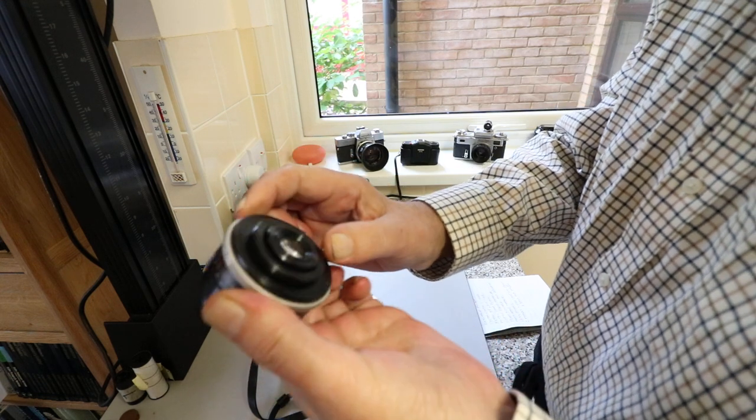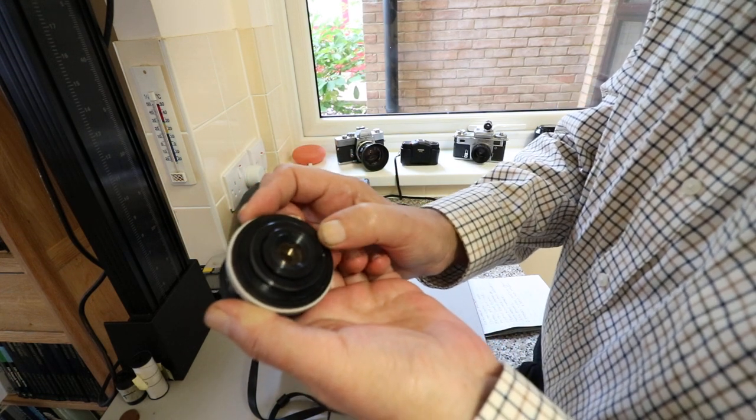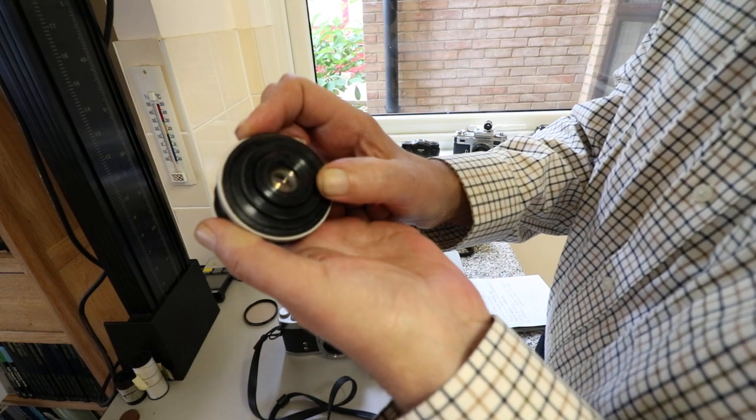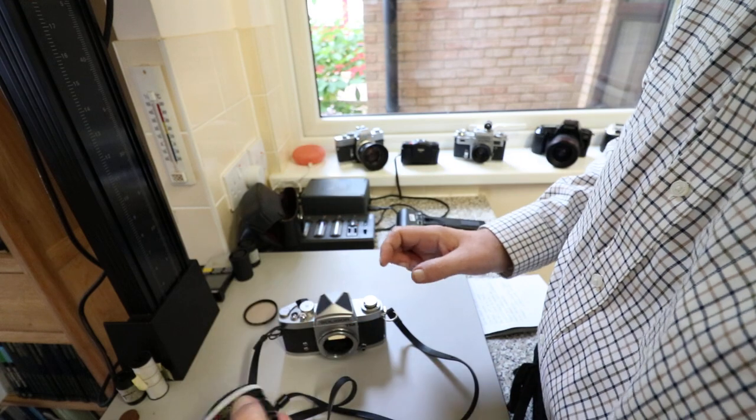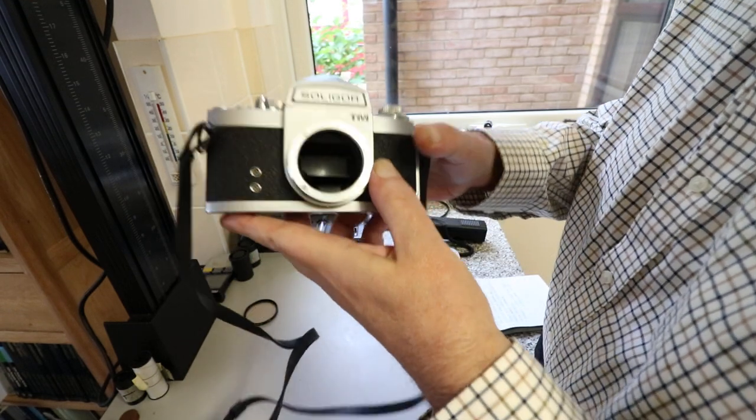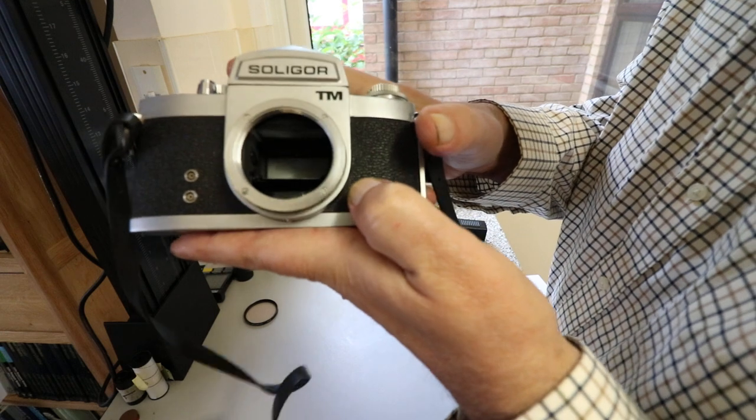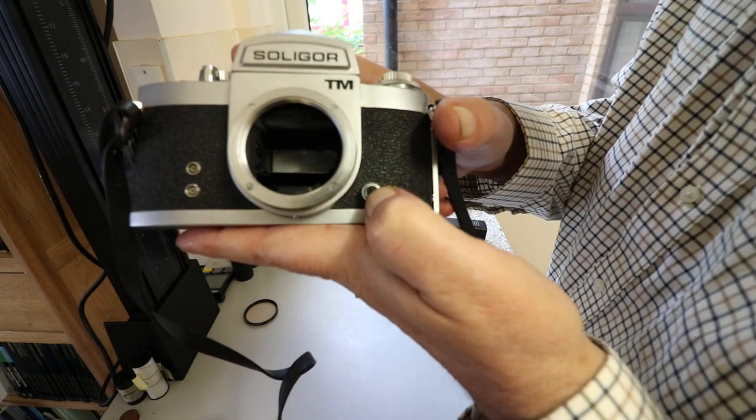All that means is it's an M42 with this little pin on the back that closes down the aperture. The same as the Fujica, this one has the little bar at the front which comes forward and pushes on it.